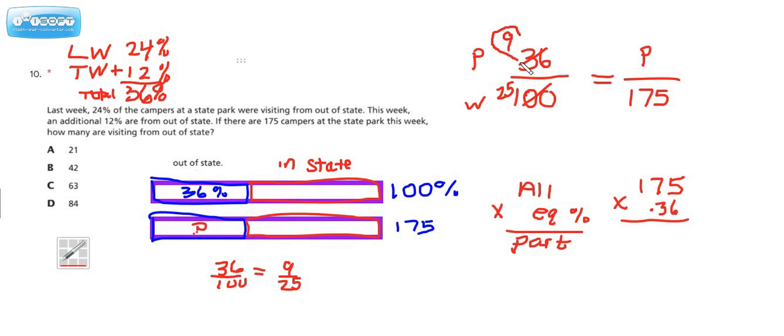So if you did this one, I think your cross products would look like this. You would have 9 times 175 equals 25 times p. And if you multiplied 9 times 175, that would be the next step. And if you did that, you would get 1,575 equals 25p.